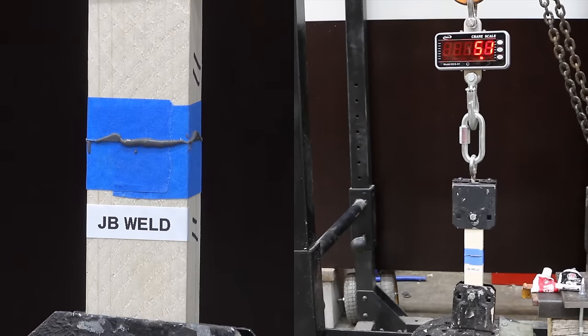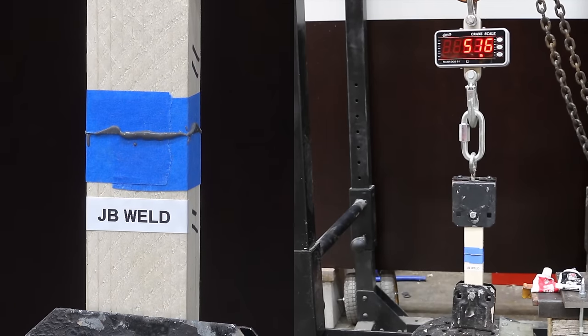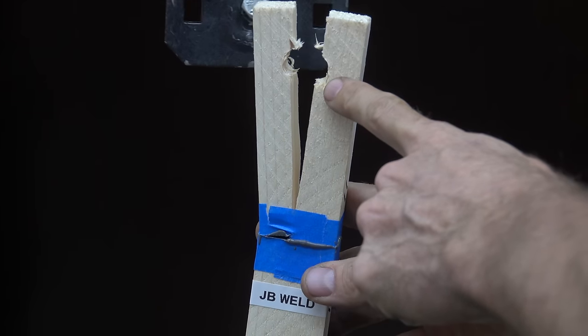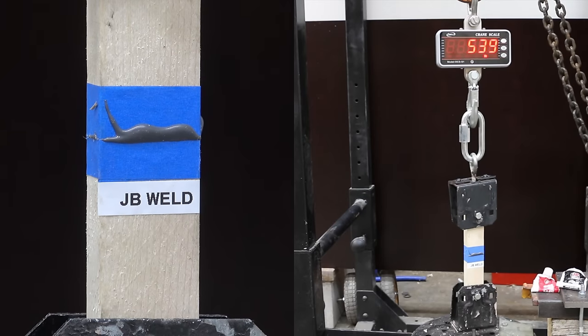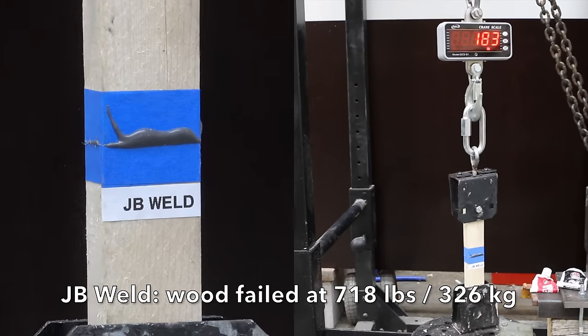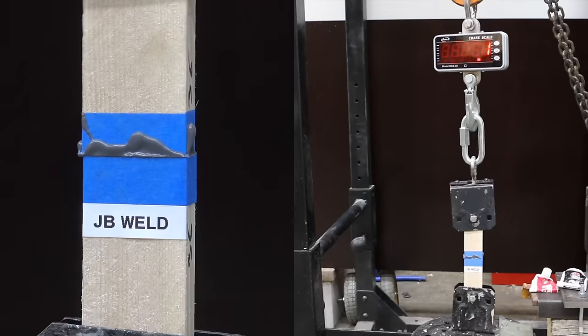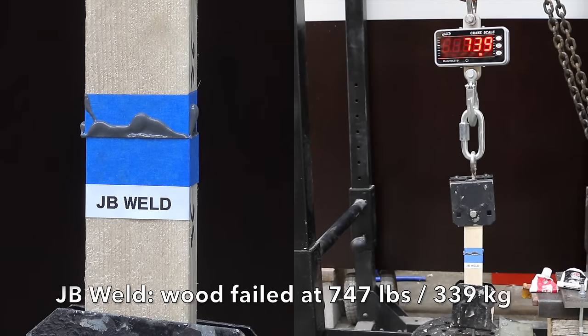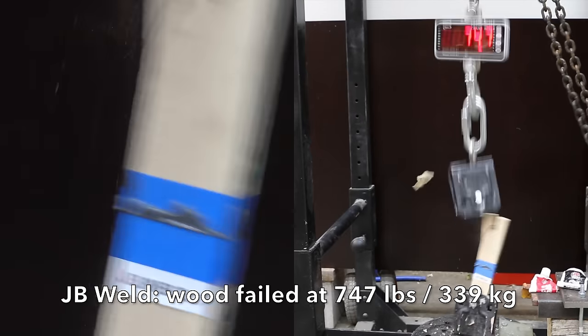Just to have a little fun, let's see how JB Weld compares with construction adhesives. The first was 619 pounds and the wood failed, not JB Weld. The second was 718, and the wood failed again. The third was 747, and the wood failed yet again. JB Weld is making this look way too easy.